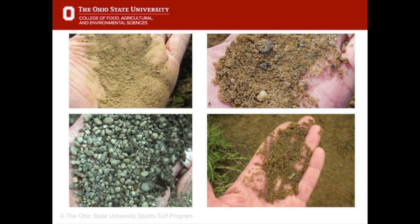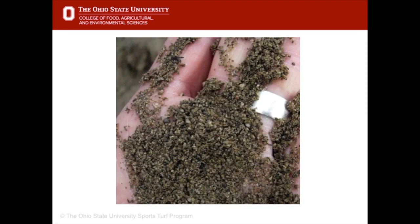Finding a good local sand supplier is the key to a good top dressing program. It's also important to get to know what the materials look like. Looking at these four materials, which do you think is a uniform medium coarse sand? One is predominantly silt and clay. One contains too much gravel. One actually is gravel. The sand on the bottom right is a uniform medium coarse sand. Once you know what a uniform medium coarse sand looks like and feels like, it makes quality control of top dressing products much easier.